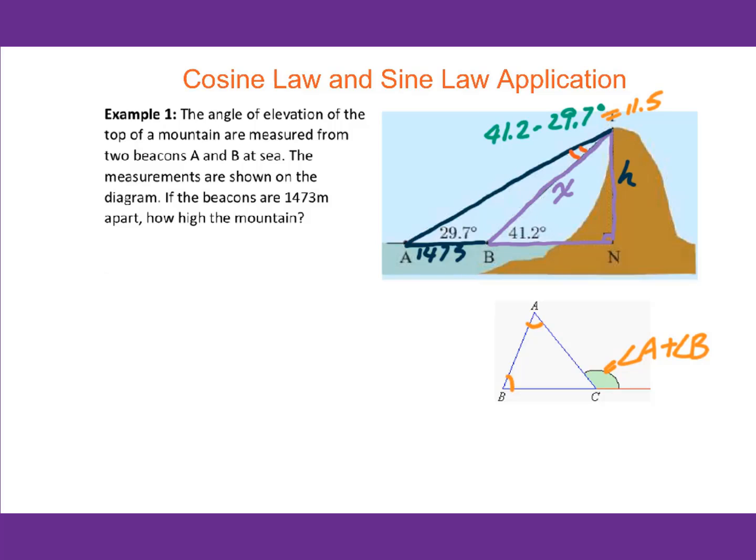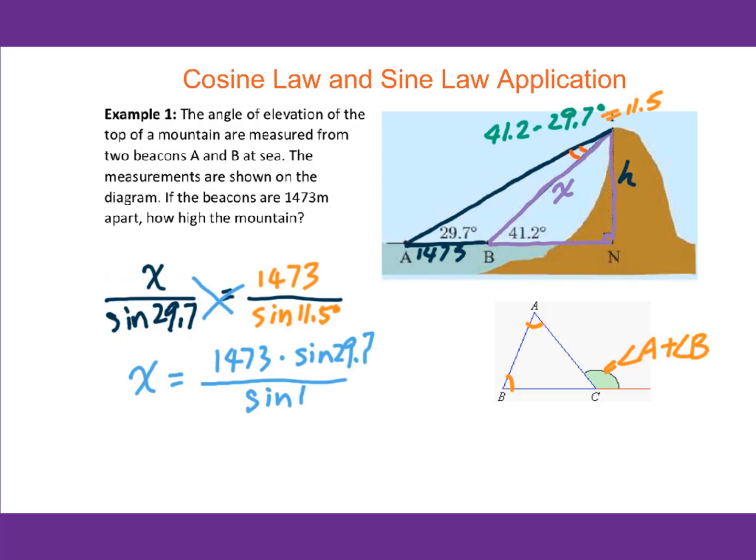For this triangle ABT, we can use the sine law to figure out X. We got X over sin 29.7 equals 1473 over sin 11.5 degrees. Put it into the calculator, you will get X equals 3660.622.